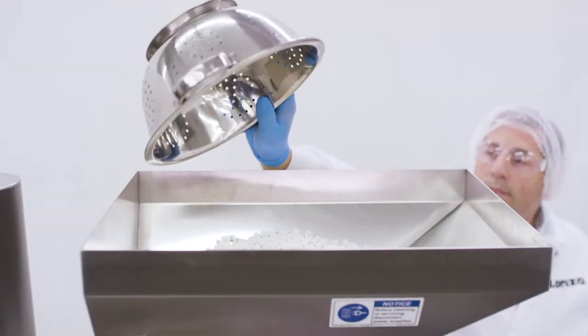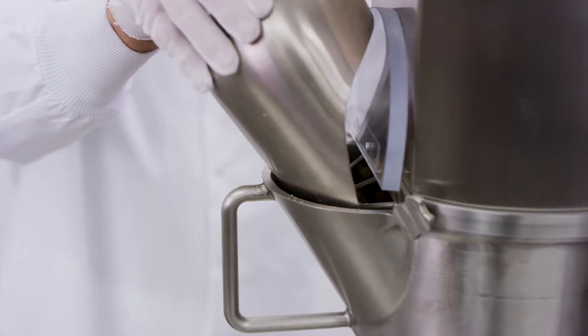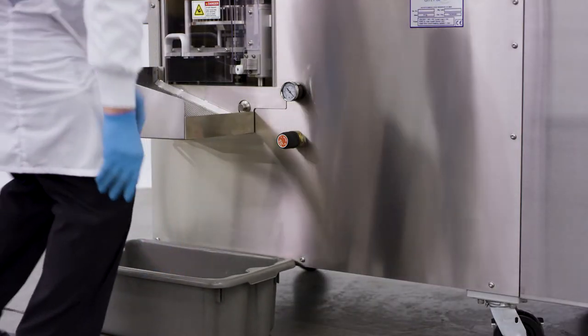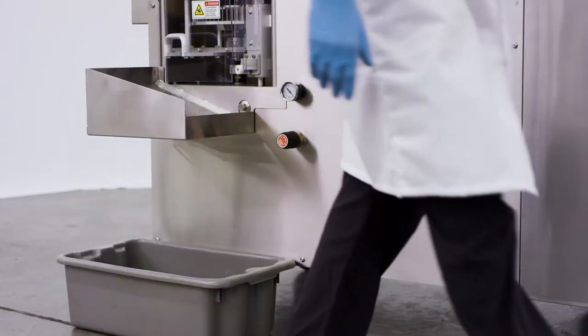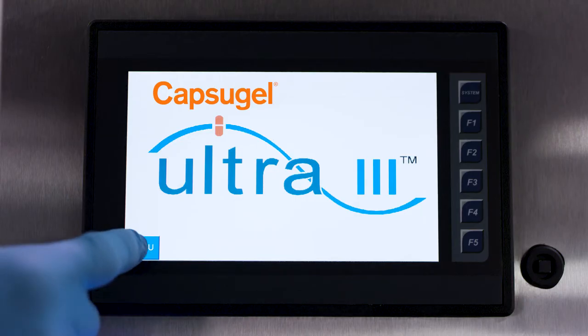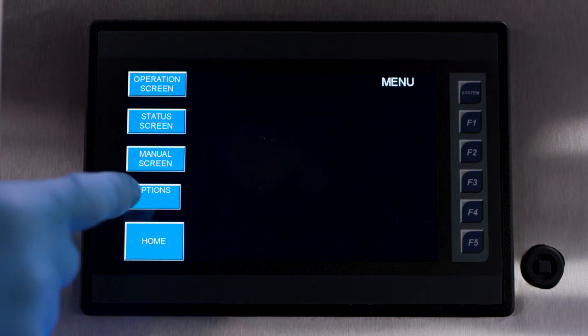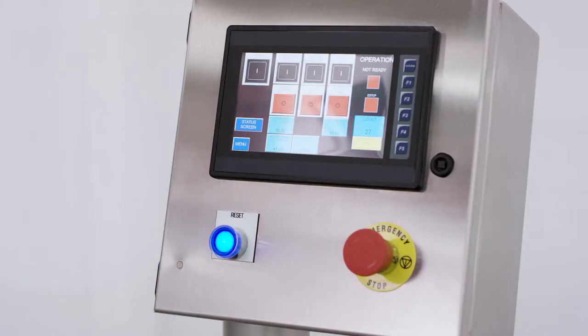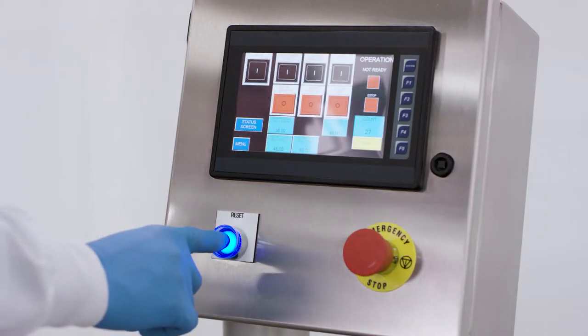To begin, fill the capsule and powder hoppers. Place a container under the jointer discharge section or the optional capsule D-duster shoot. Next, turn the machine on. Once the machine has booted up, press menu on the HMI screen. Select operations screen. Press the illuminated blue reset button below the screen.